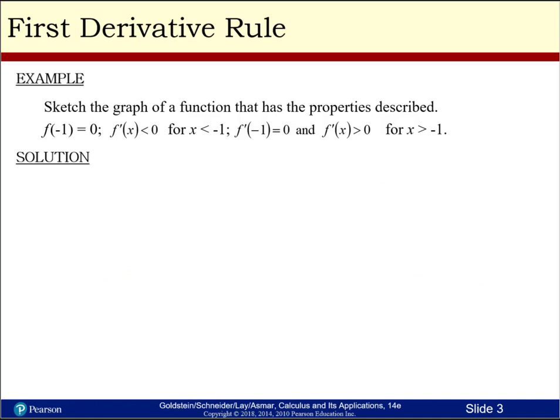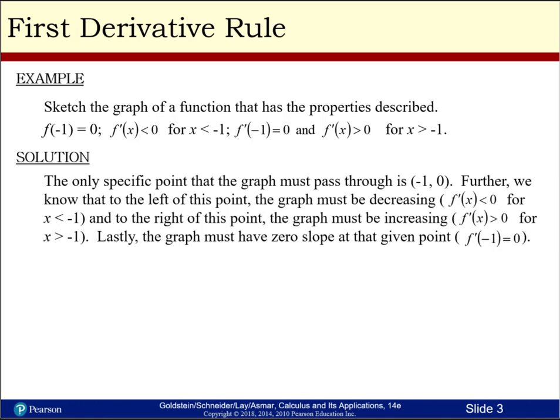For our first derivative rule, we're going to look at an example. We're going to sketch a graph of a function that has the properties described. First, they give us a point: f of negative one equals zero, so we'll draw that dot on our graph. Then they tell us that f prime of x is less than zero, meaning the slope is negative and decreasing for x less than negative one. Then the slope at negative one, f prime of negative one equals zero, meaning it flattens out there. And then f prime of x is greater than zero for x greater than negative one, meaning the function changes to being increasing.